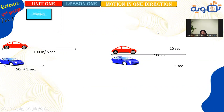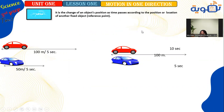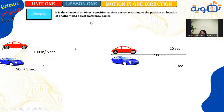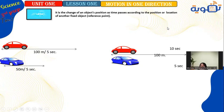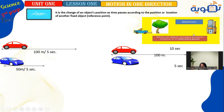We have to know what is motion, and when can we say that anybody is moving or in motion. Motion is the change of an object's position as time passes, relative to the position of another fixed object or fixed point. According to this moving car, it changes its position from the building towards the tree. Therefore, this car was in motion.